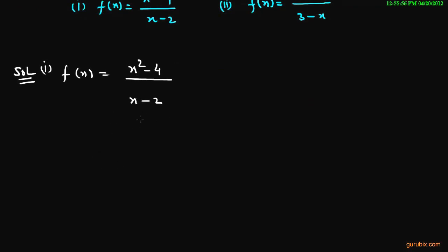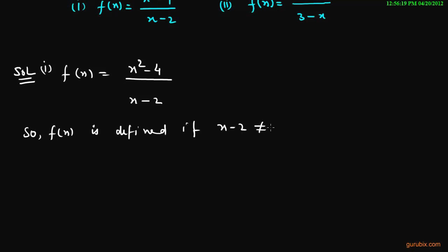This is a rational function, and we know that a rational function is not defined if the denominator is 0. So f(x) is defined if x minus 2 is not equal to 0. This means the domain of the given function f is the set of real numbers except 2.